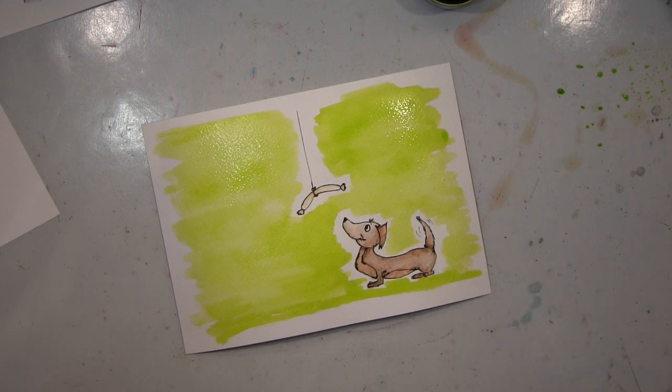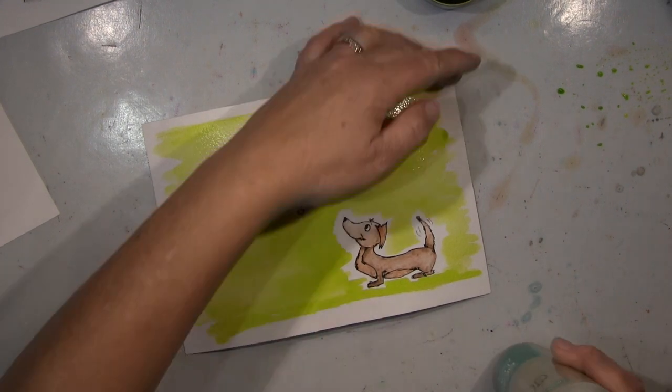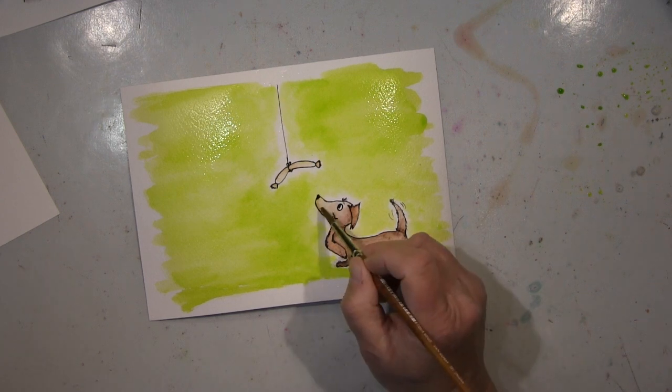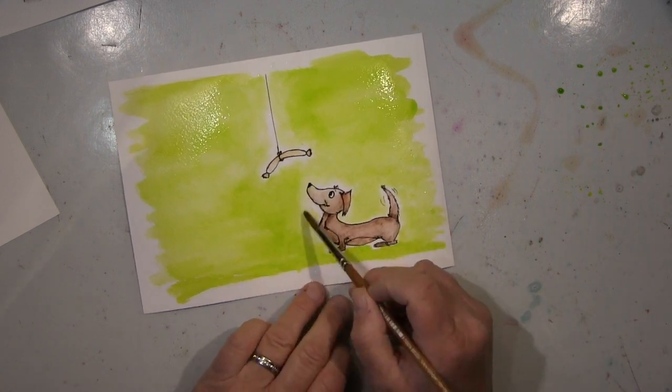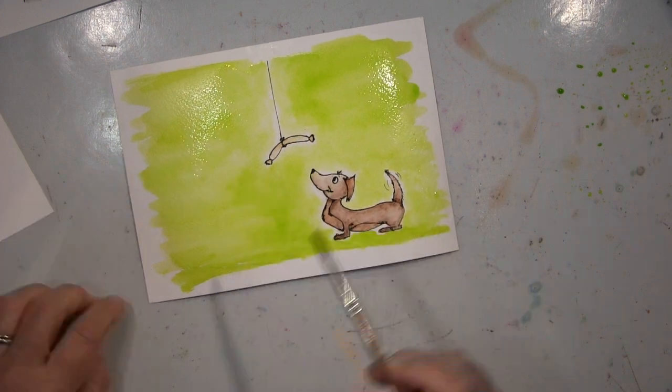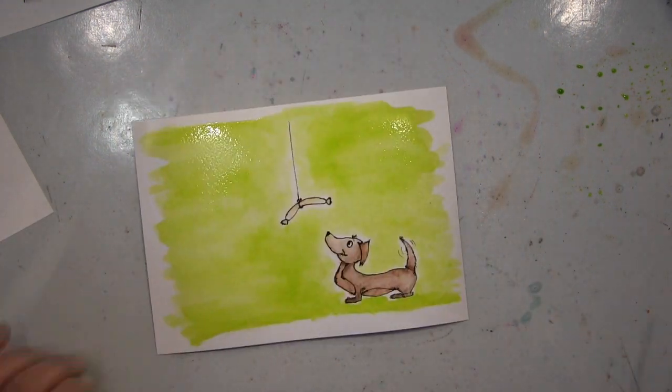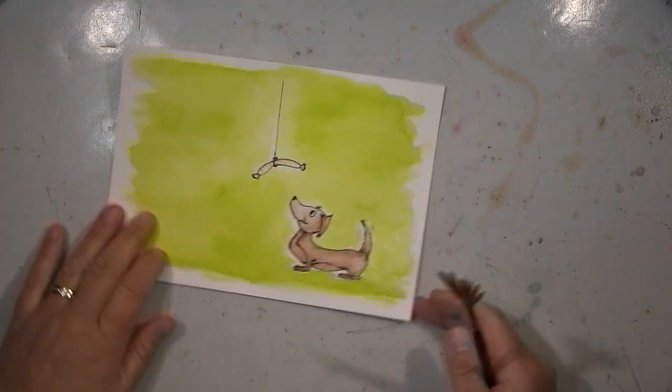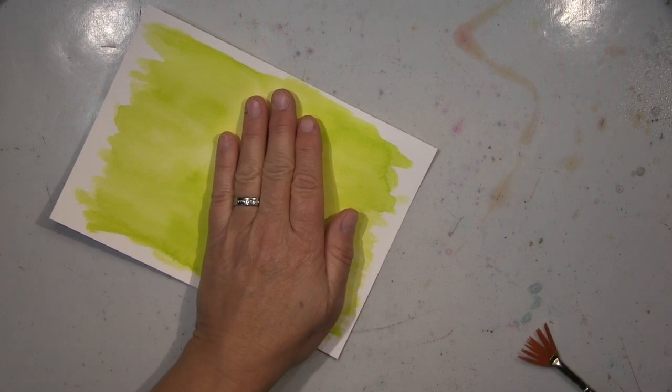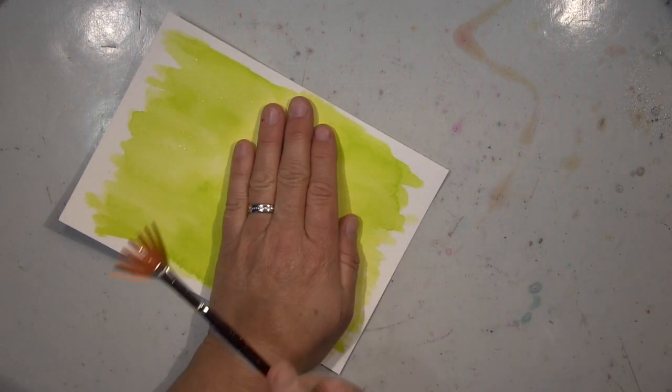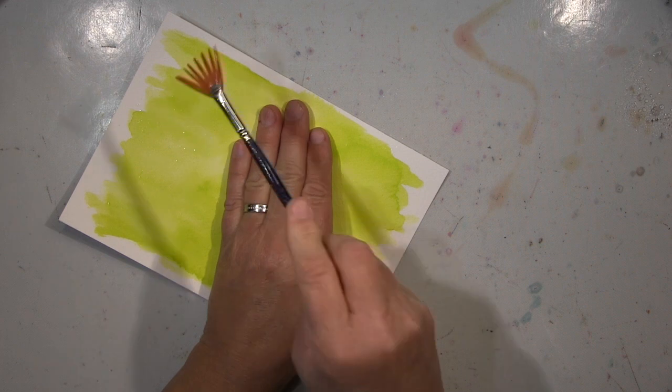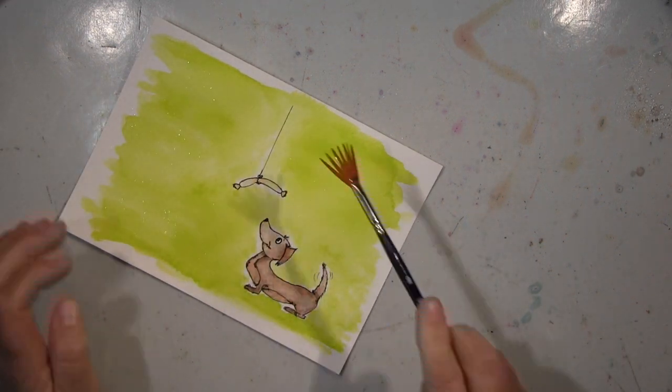Ich habe jetzt hier angefangen, den Hintergrund einfach grün zu nehmen, nämlich die Intense, die ich, wie ich vorher in mehreren Videos schon sagte, immer noch in einem Töpfchen habe. Die sind ja mittlerweile nur noch als Marker zu bekommen, aber ich habe noch die Töpfchen, die ich alle verbrauchen muss.